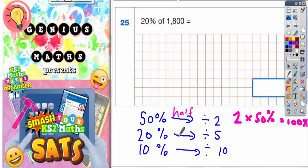If you were finding 20% of a number, you'd have to divide by 5. And it's all because 5 lots of 20% would get you back to 100%.